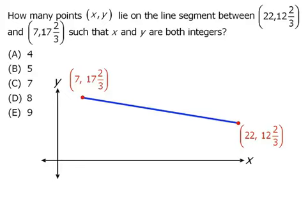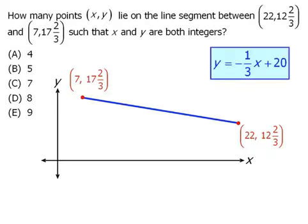Now you should already be familiar with this procedure, so I'll just tell you that the equation of this line is y equals negative one-third x plus 20.